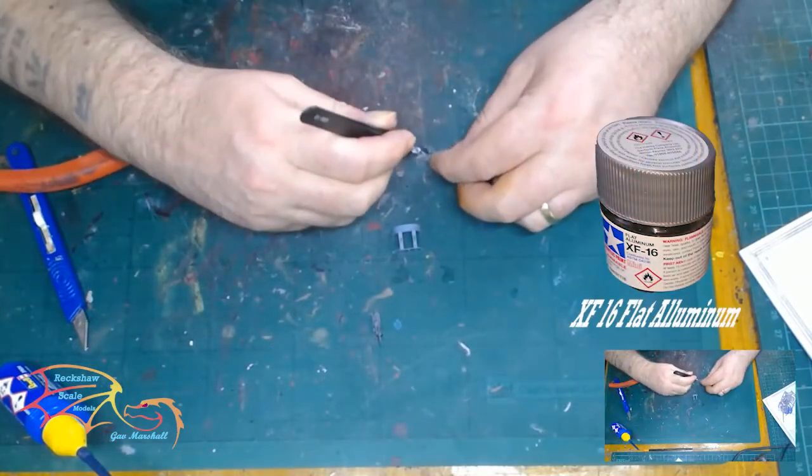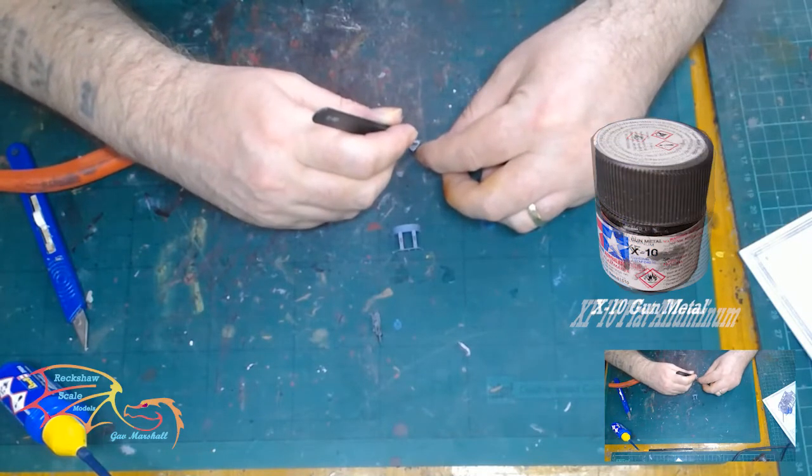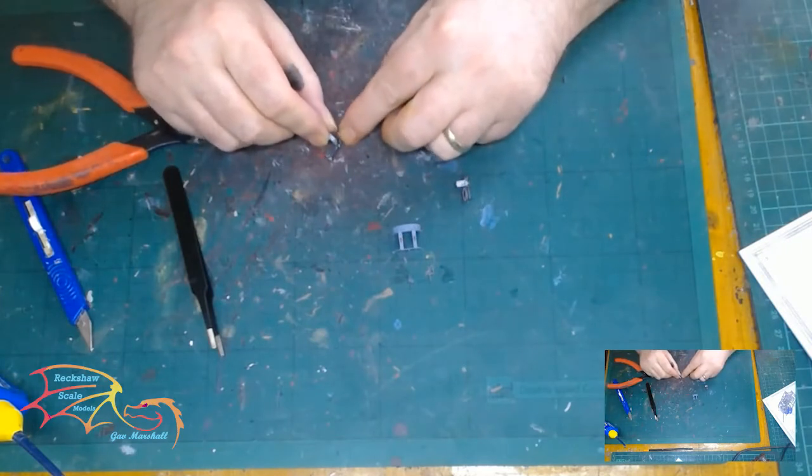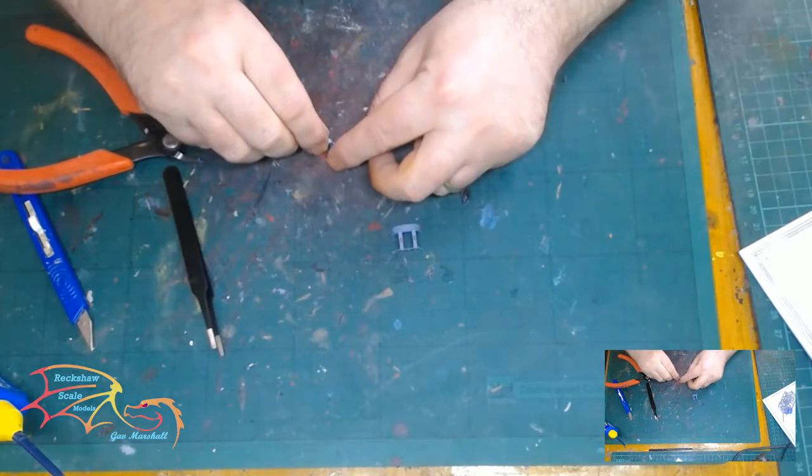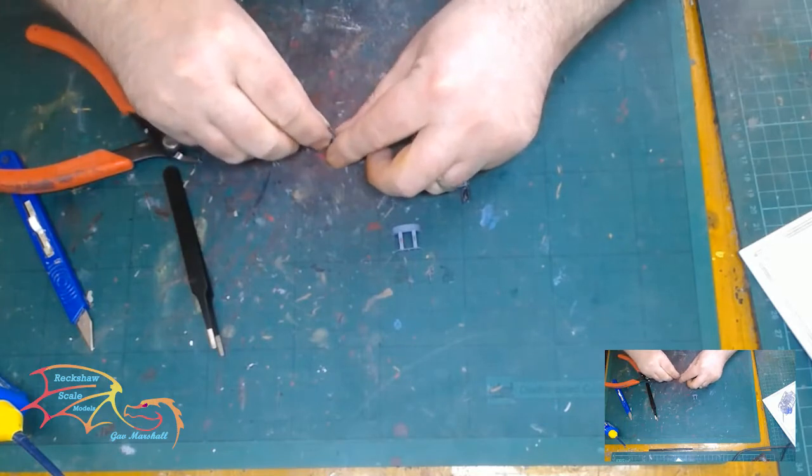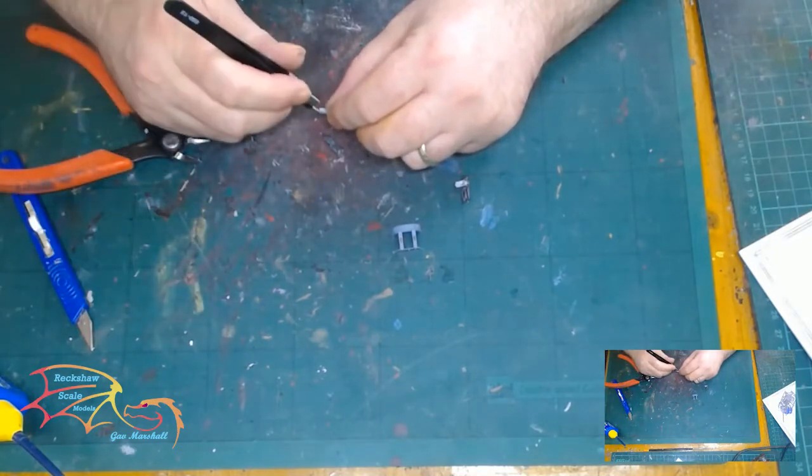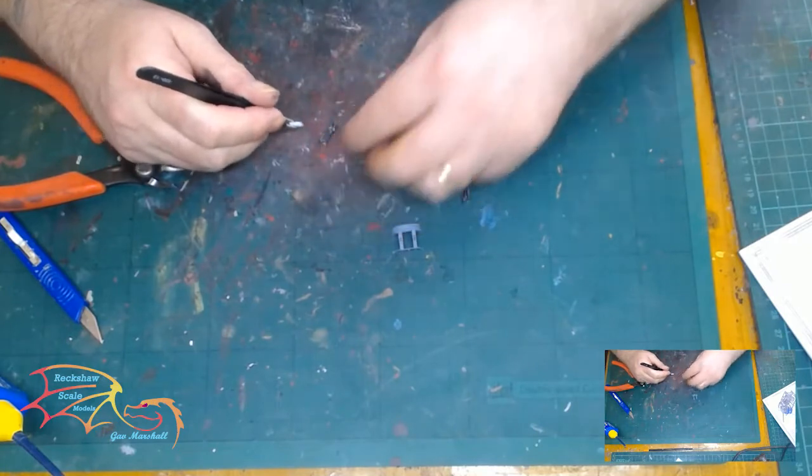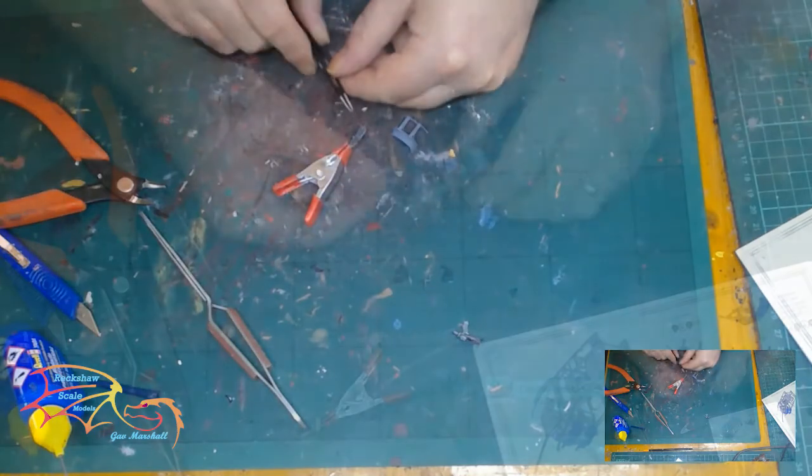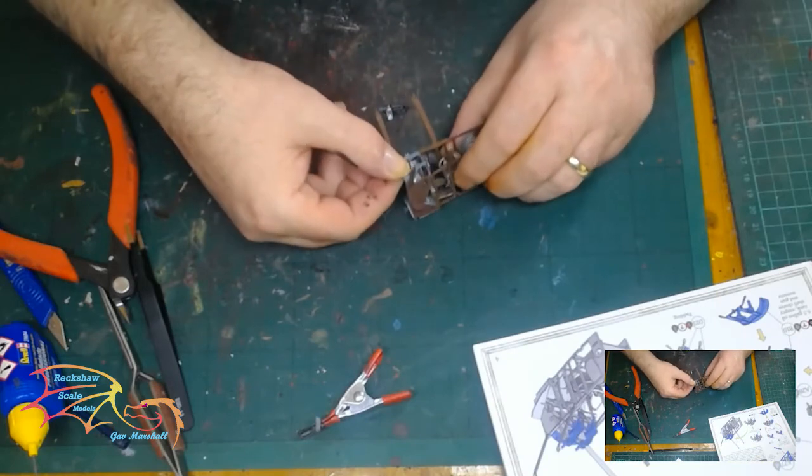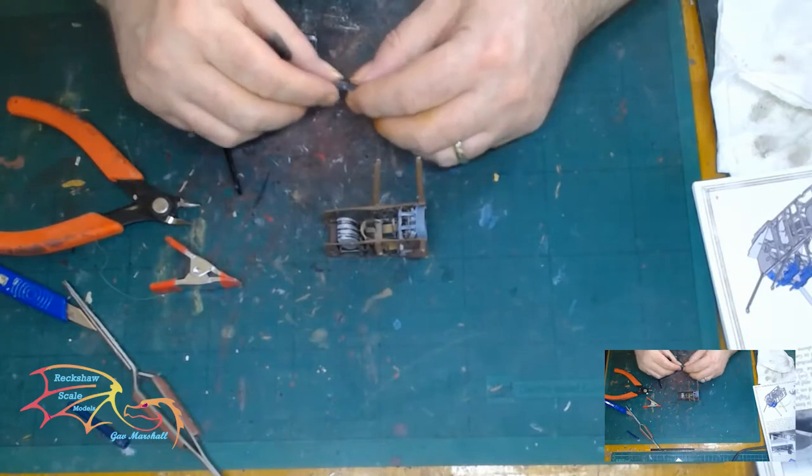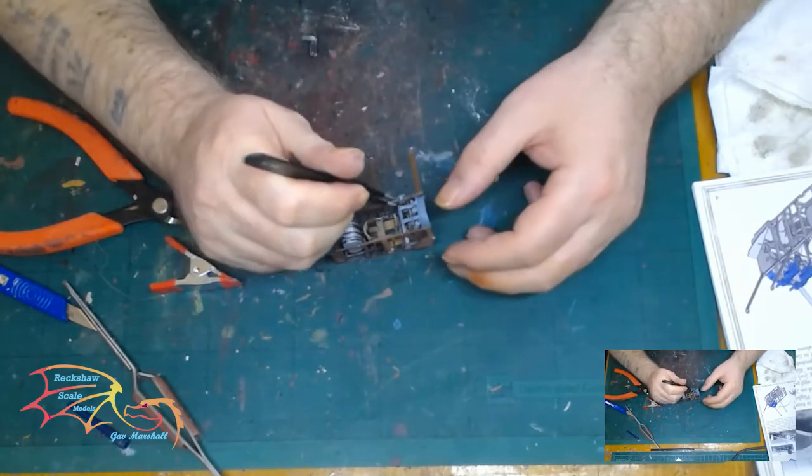Moving on to the guns, the ammo is XF-16 Flat Aluminum, and they just go on the side of the gun. The gun itself is X-10 Gun Metal, both by Tamiya. It's important to note the location when you're building these. They can go on both sides of the weapon, but they should only go on one side—one facing out of the mount and one side facing in. First, I place the mount on, and the mount sits over the instrument panel in the little U-shaped areas before attaching the actual weapons.